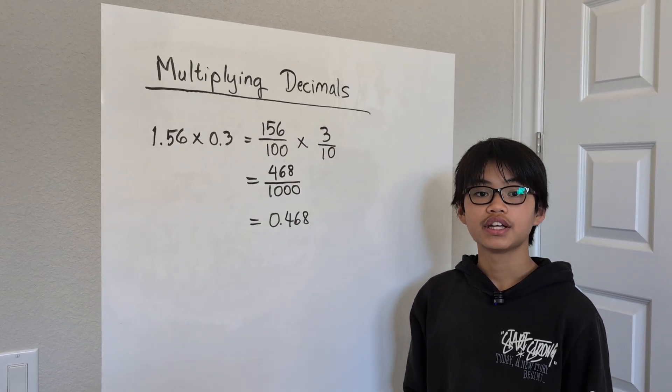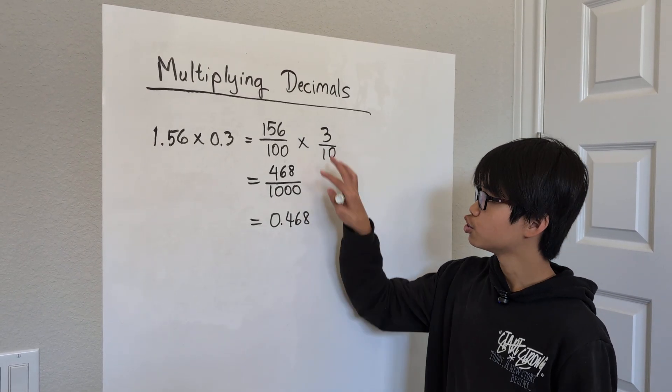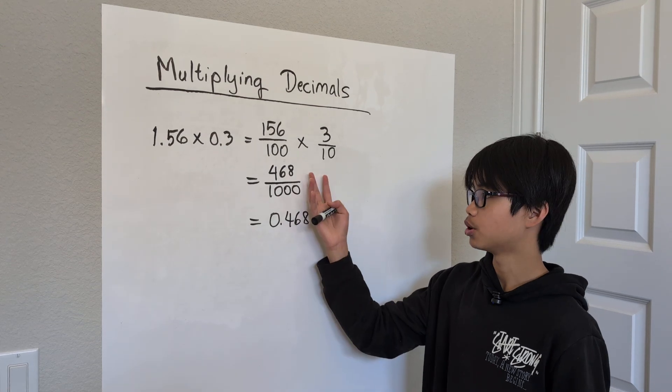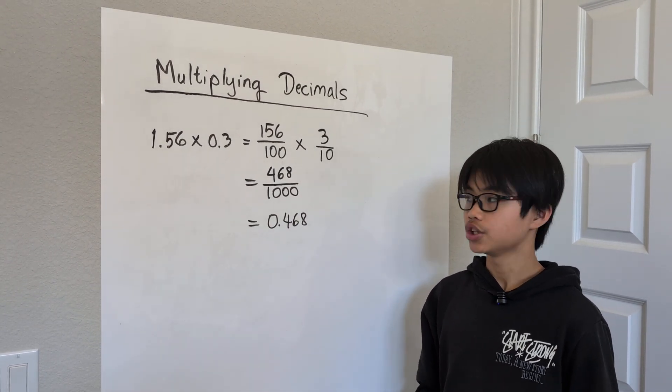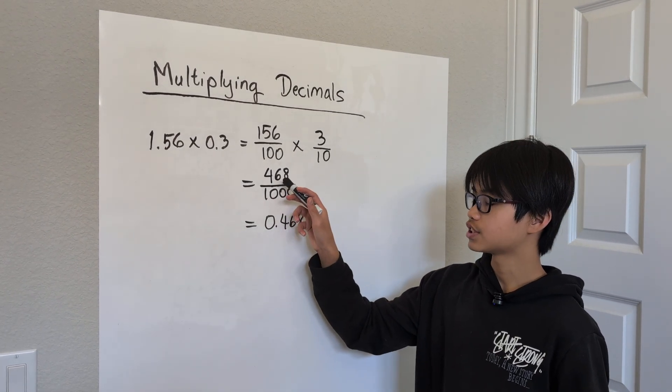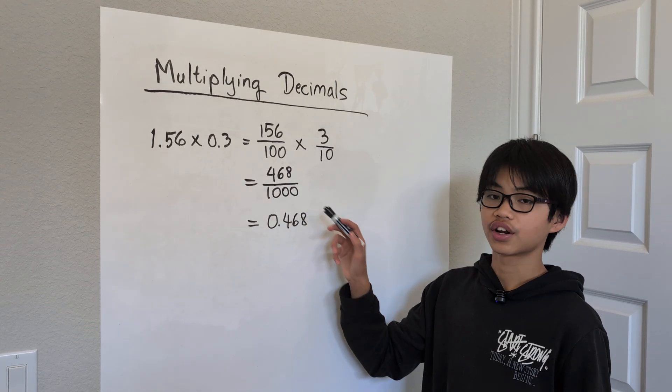The next step is to multiply the top two numbers and then multiply the bottom two numbers. In this example, that will equal 468 over 1000.